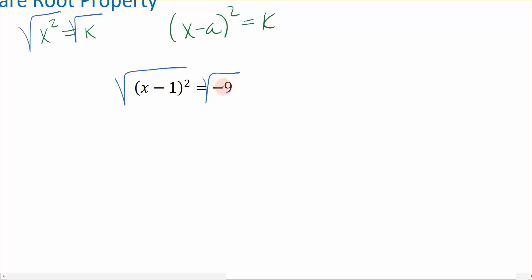You might be saying to yourself, wait a minute, I can't take the square root of a negative number. But yes, we can. We can take the square root of a negative number. It just gives us an imaginary number back, and we were never restricted that we could only give back real solutions. So we can go ahead and take the square root of both sides.